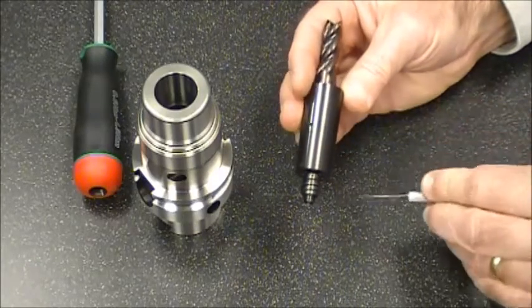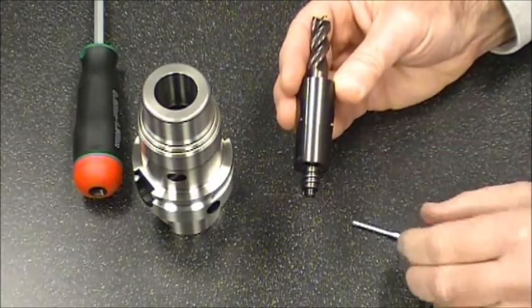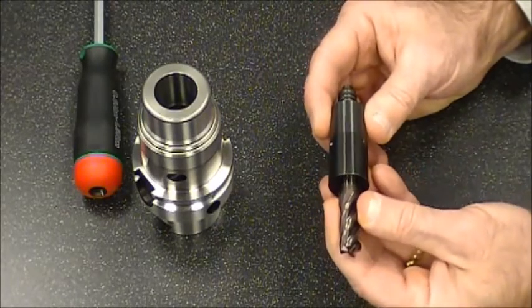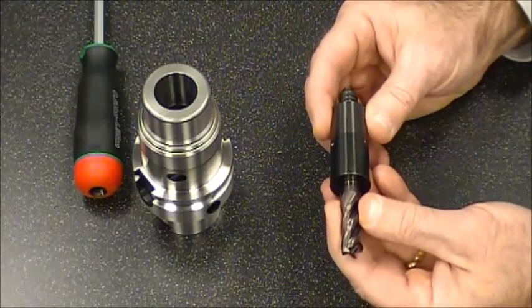Now we have to take the play out of the end mill. We can see that there's play in there right now, as the pin is hitting the back of the Weldon flat.